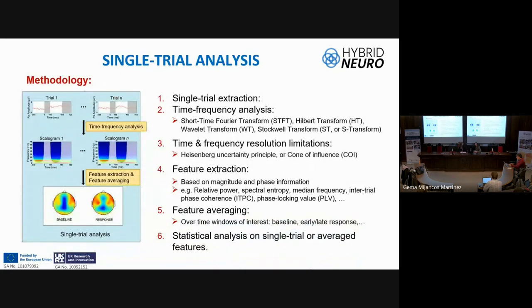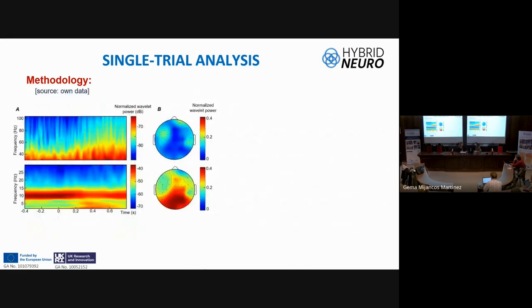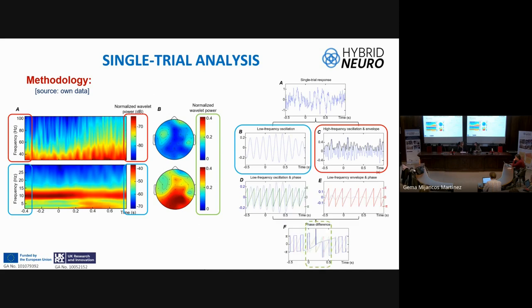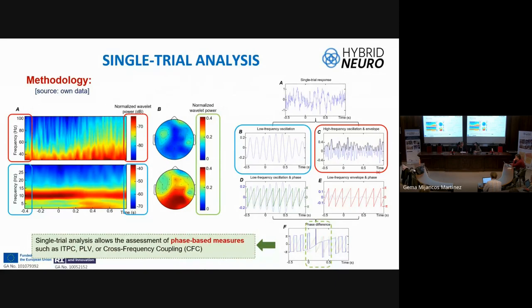The single trial methodology: first, extract each trial; then perform time-frequency analysis, choosing the transform that best suits the data while keeping in mind time-frequency resolution limitations — for example, a wavelet transform requires accounting for border influence. Then extract features based on amplitude, similar to average evoked potentials, but also including phase information not available with averaging. Finally, perform feature averaging and statistical analysis. A time-frequency map can be split into low and high frequencies; averaging over a time window yields topographic plots. With single trial analysis, phase information enables computation of cross-frequency coupling or phase-locking values.